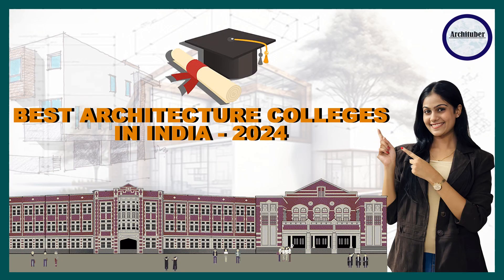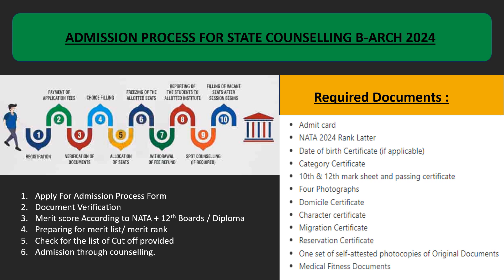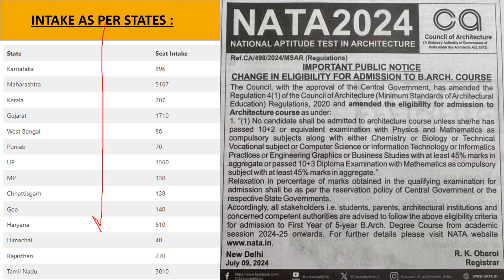I hope you have watched my previous video where I have covered government colleges and private colleges so you will have a clear idea — make sure you watch that video. Now discussing about state counselling: first you will have to fill the form, then there is document verification with listed documents, and then you will need your merit score. Depending on your merit score, the cutoff list will be provided. I have mentioned all of the seat index state-wise here.